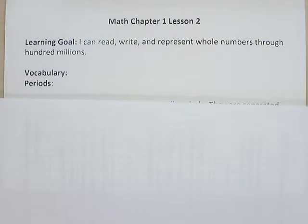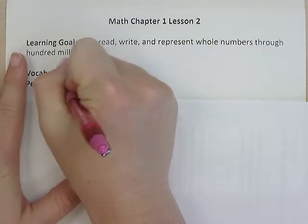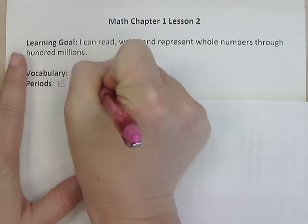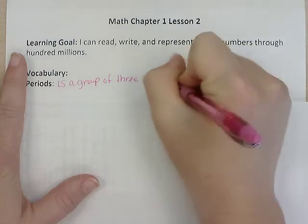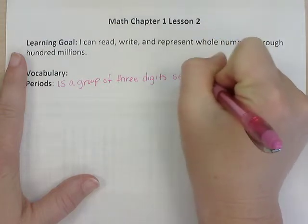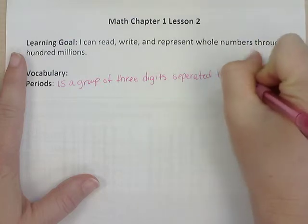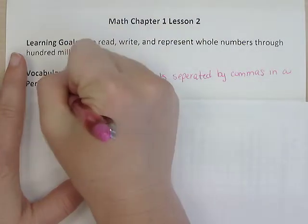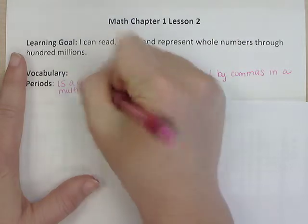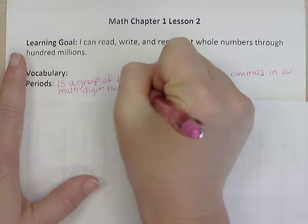So we do have a vocabulary word today that we are going to be learning about and that is the word periods. So I'm going to go ahead and write the definition for the word periods and as I write it I would love for you to add it to your notes as well. Periods is a group of three digits separated by commas in a multi-digit number.